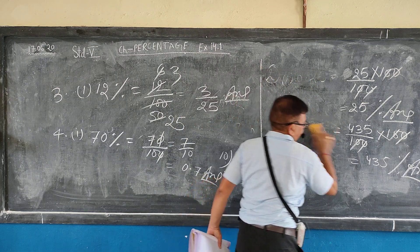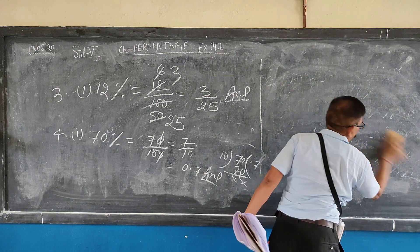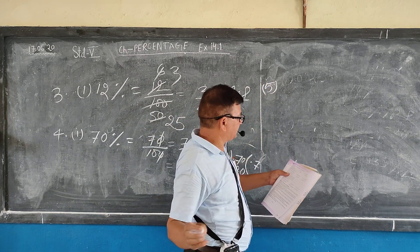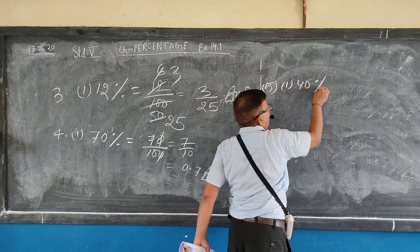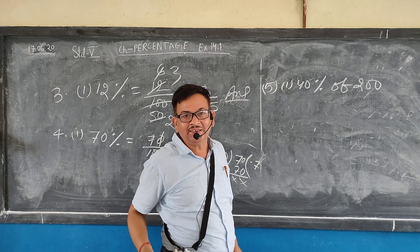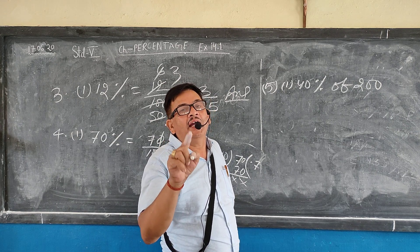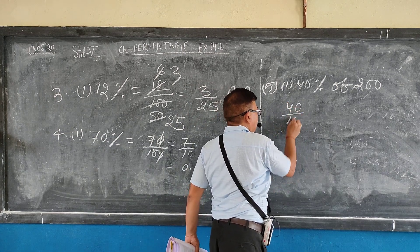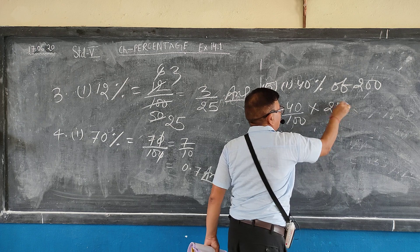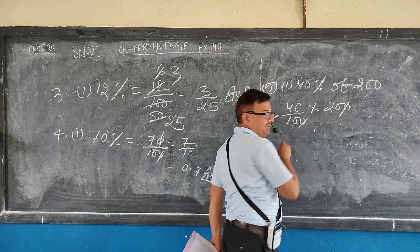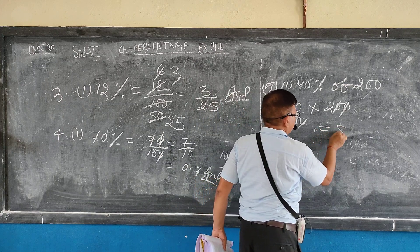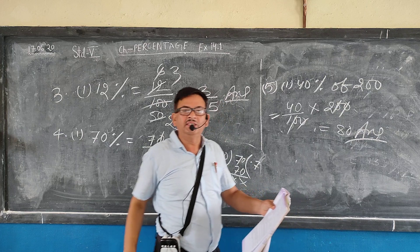Question number 5: find the value of 40 percent of 200. The percent sign means divide with 100. So write 40 by 100 into 200. Cancel the 10s: 40 into 2 gives 80. 80 is your answer.